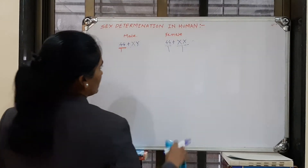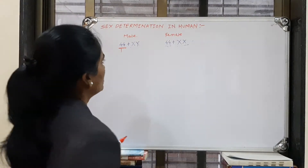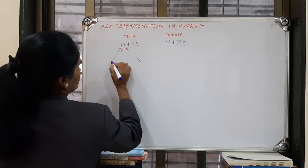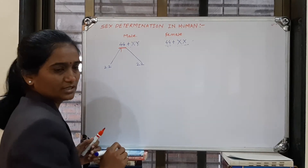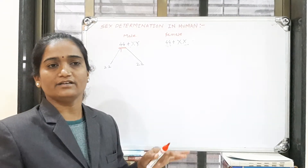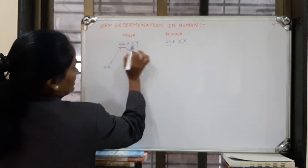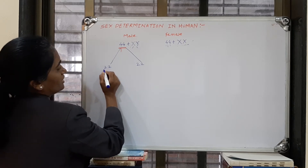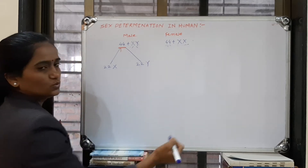During gamete formation, the 44 autosomes get segregated into two sets of 22 each. The sex chromosomes also get divided. So from the male, one gamete carries 22 autosomes plus X, and another carries 22 autosomes plus Y.